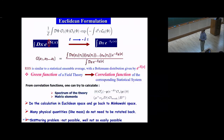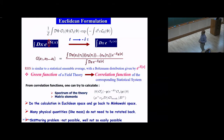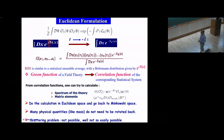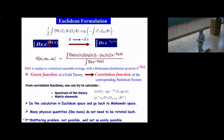The matrix element also — for example, if we want to study the B to D transition, this can be formulated in terms of the path integral. The trick is that you do the calculation in Euclidean space and go back to Minkowski at the end if possible. Many physical quantities like mass and matrix elements do not need to rotate back. There will be a problem for scattering, but people have addressed that using some tricks.